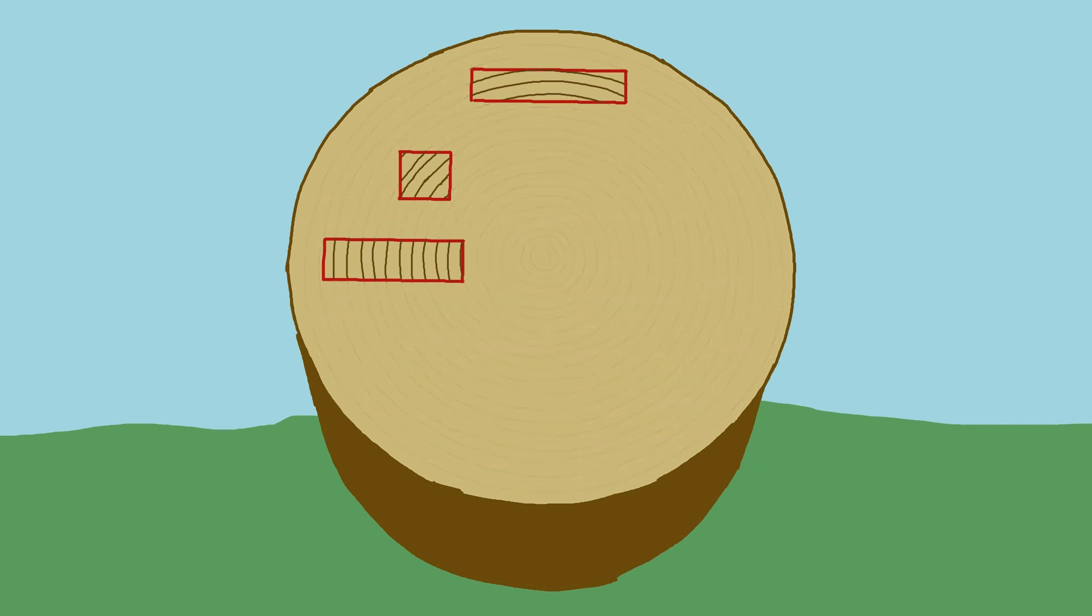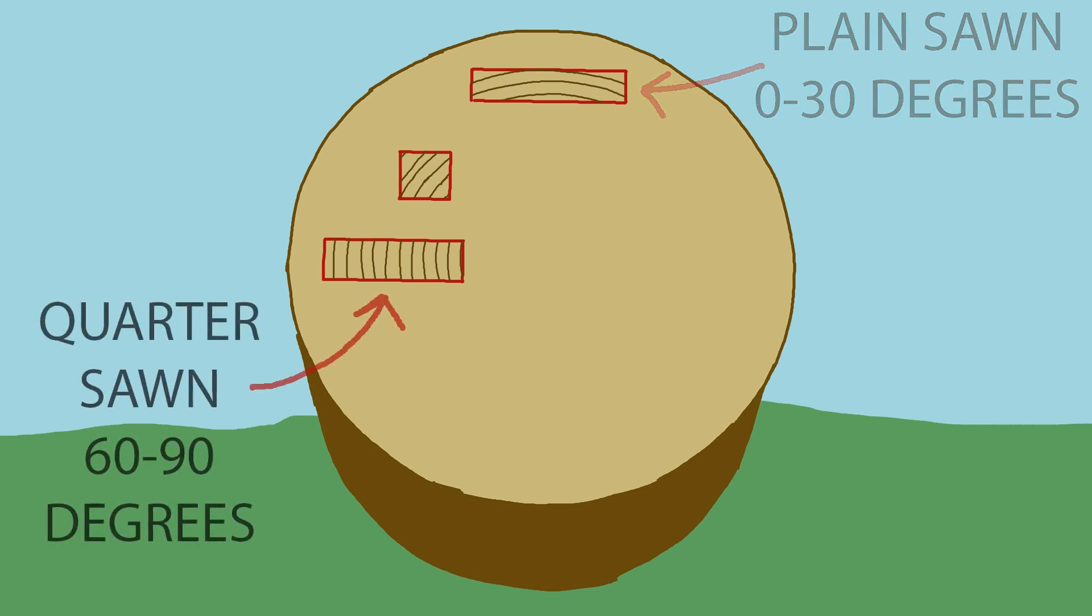If a board's faces are close to parallel to the tree's growth rings, it's called plain sawn. If a board's faces are nearly perpendicular to the tree's growth rings, this is called quarter sawn.